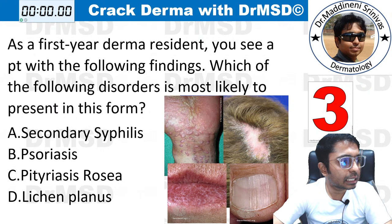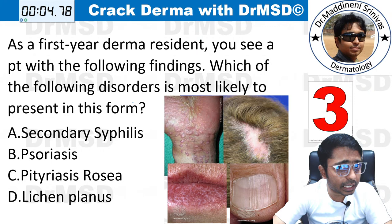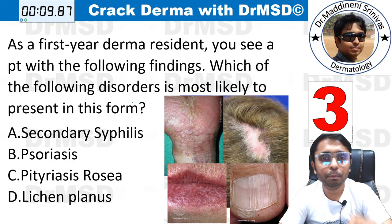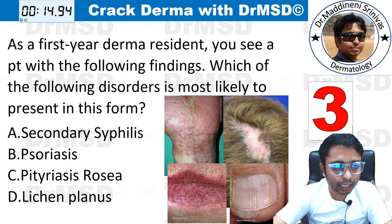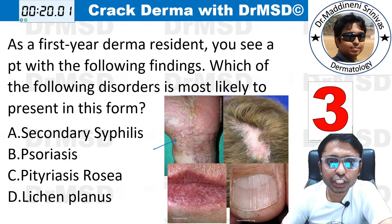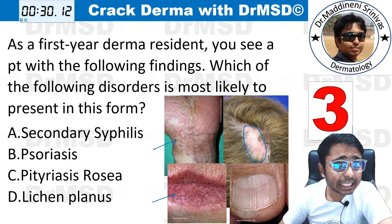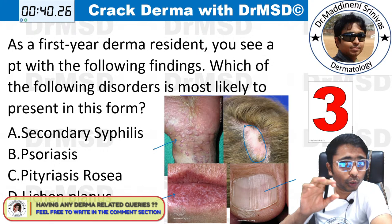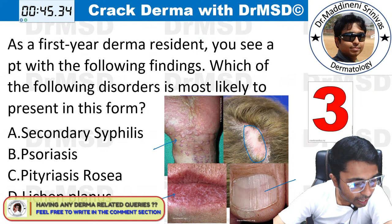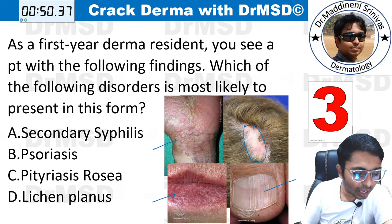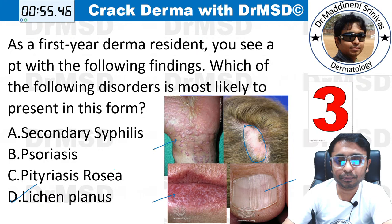Question number three. As a first year derma resident, you see a patient with the following findings. Which disorder is most likely? You are able to see violaceous plaques and papules over the wrist — the flexor area — with scarring alopecia over the scalp. You can also see a lacy network-like pattern called Wickham's striae, and over the nails there are longitudinal ridges. The answer is option D. Pragna Chaudhary, Hamad, and Ankit — all of you are absolutely correct.